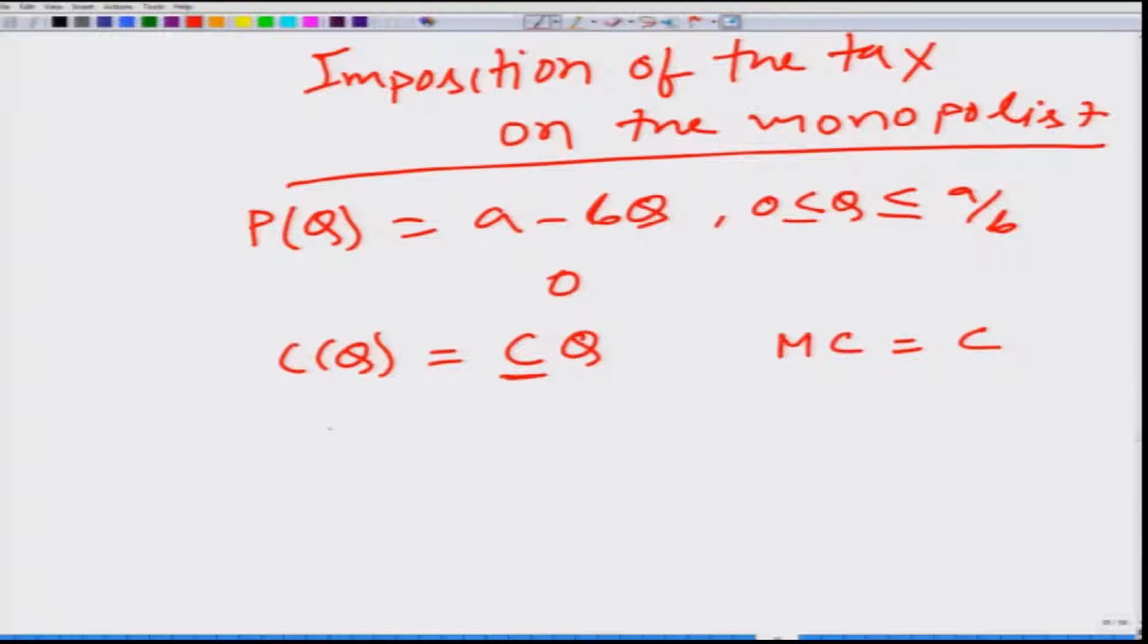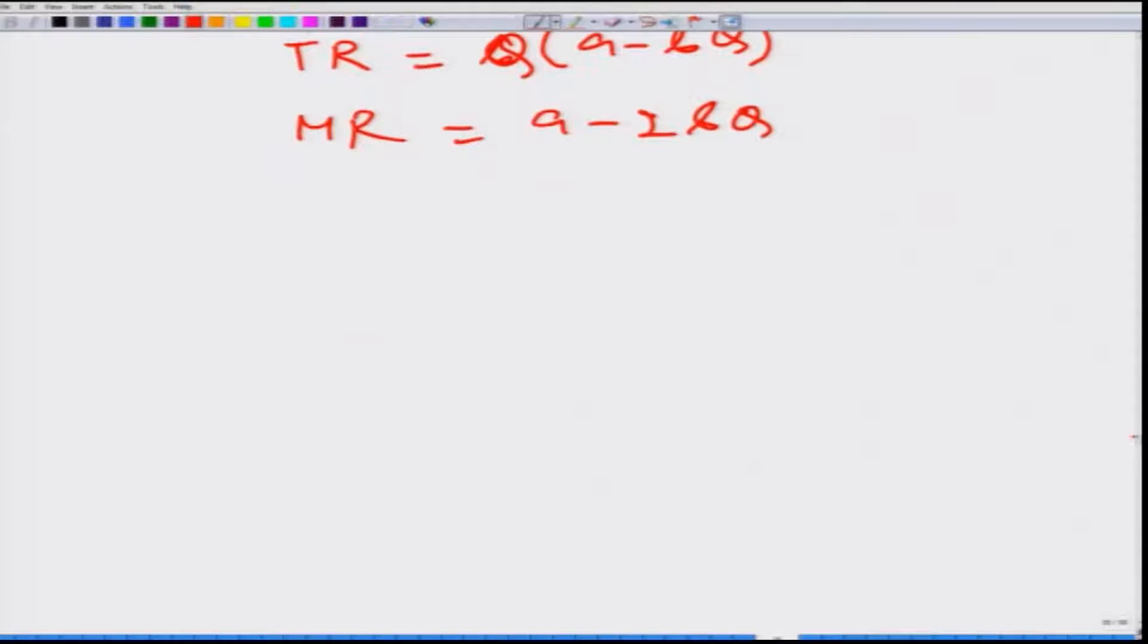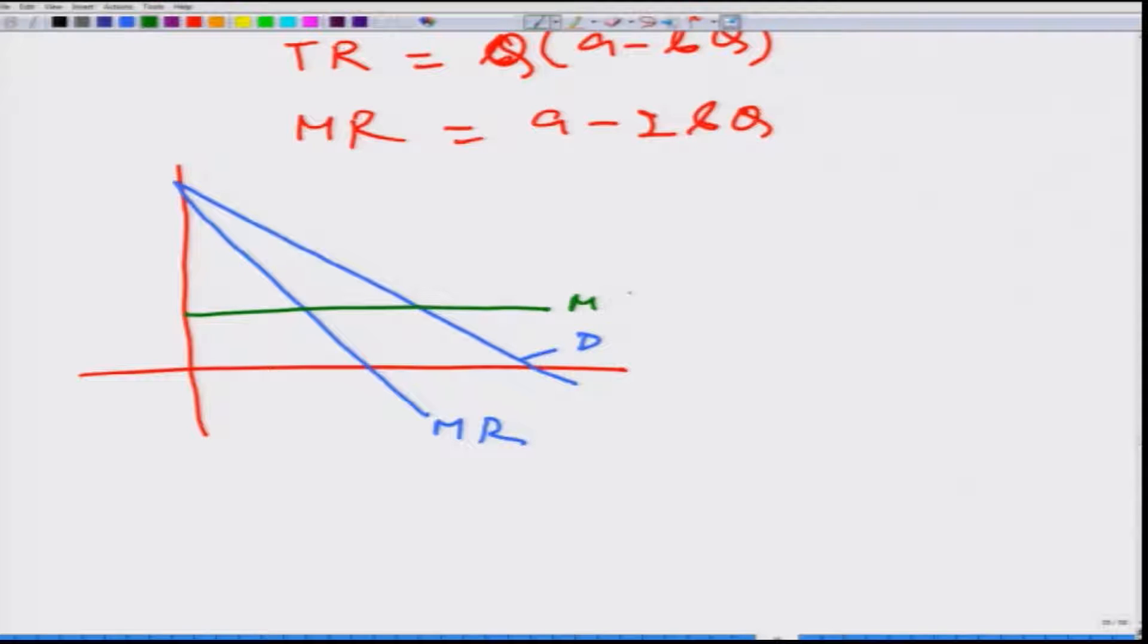Let us draw it. We can obtain the total revenue, which we have done many times. The marginal revenue would be equal to a - 2bQ. So this is the demand function, this is the marginal revenue function, and let us say this is the marginal cost function. What happens here is that the monopolist produces Q* amount and charges price P* in the market.